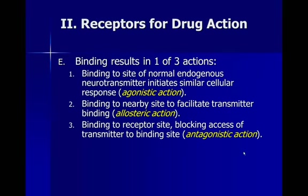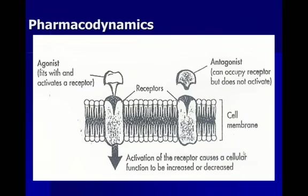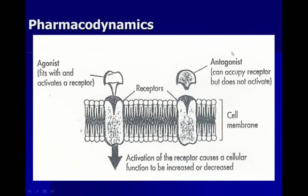Finally, when we talk about binding to a receptor site rather than initiating an action like the neurotransmitter would, what can sometimes happen is a drug will have what's called an antagonistic action — it will block access of the transmitter to the binding site, actually reducing the function of that neurotransmitter. An antagonist action reduces the effect of that particular neurotransmitter. So an agonist acts like the neurotransmitter; an antagonist actually blocks it. An agonist will fit with and activate the receptor, while an antagonist will occupy that receptor site but doesn't activate it, so it doesn't allow anything to function like the neurotransmitter.